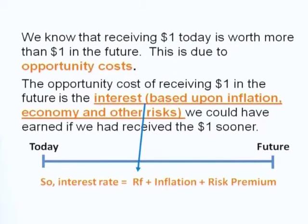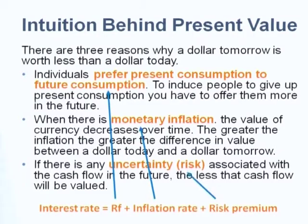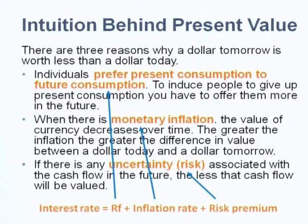One dollar today is worth more than one dollar tomorrow because you can compound interest and get more money in the future. The first component of interest rate is the real risk-free rate. For example, if you are hungry today and someone asks you to wait until tomorrow, you would want compensation — that represents the postponement of consumption. You can use the real GDP growth rate as a proxy for the real risk-free rate.